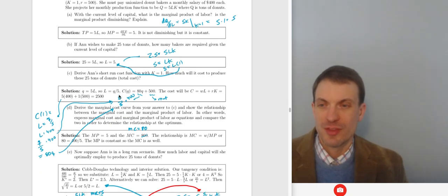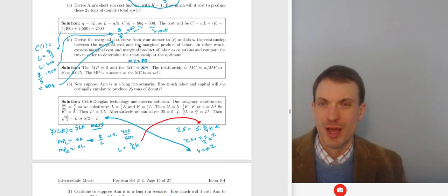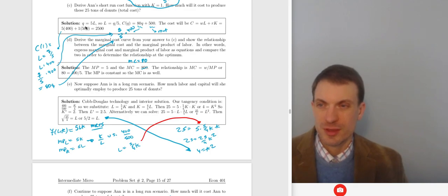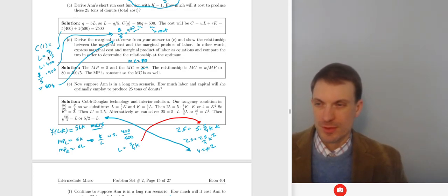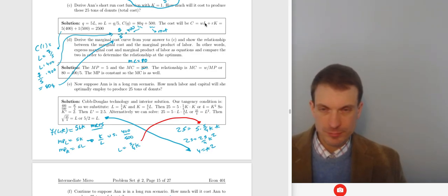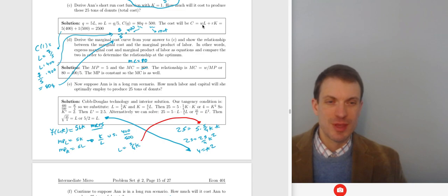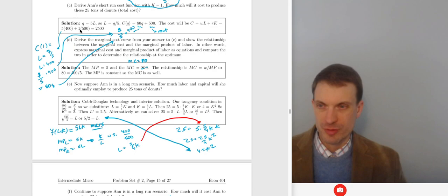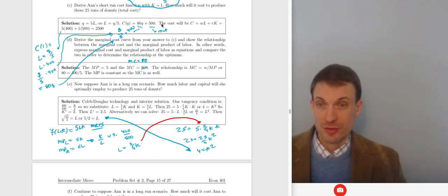Derive Ann's short-run cost function if capital equals 1. We know output = 5L because K = 1. The wage is 400 times the amount of labor. So input costs are WL + rK: that's 5 times 400 plus 1 times 500, which gives us 2,500. So the total cost to produce 25 tons of donuts is $2,500.